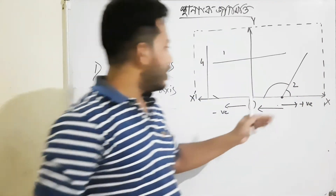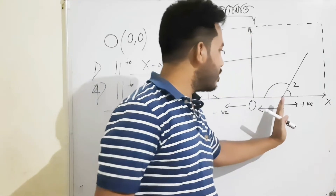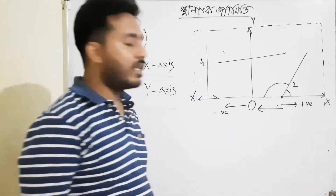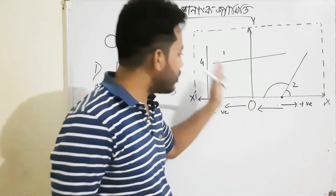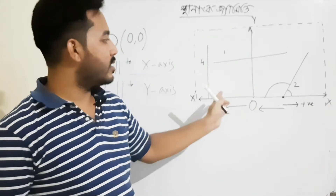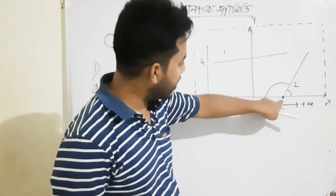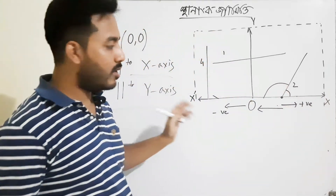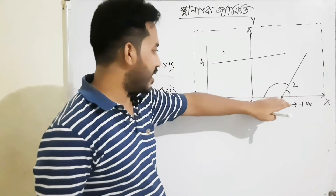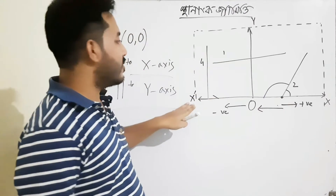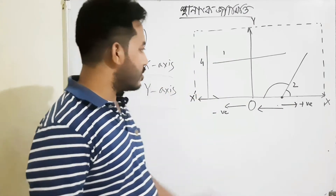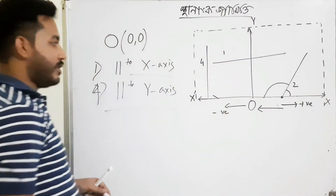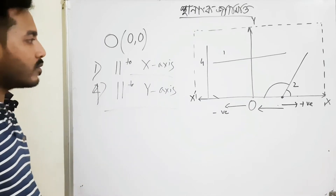If we start from this point, this direction is taken as positive of x and this direction is taken as negative of x. It is not like that — from the origin you have to choose the positive or negative direction. From this point, you can take this as the positive direction of x, and the other as the negative direction of x.